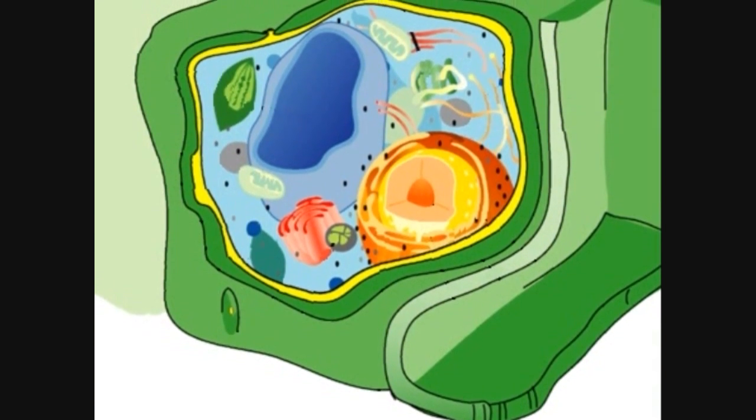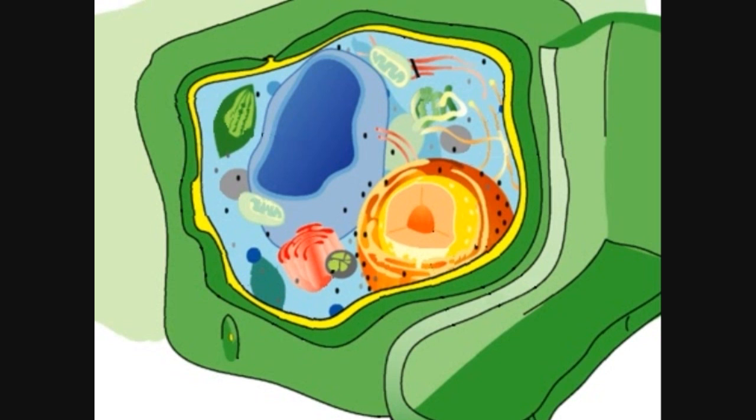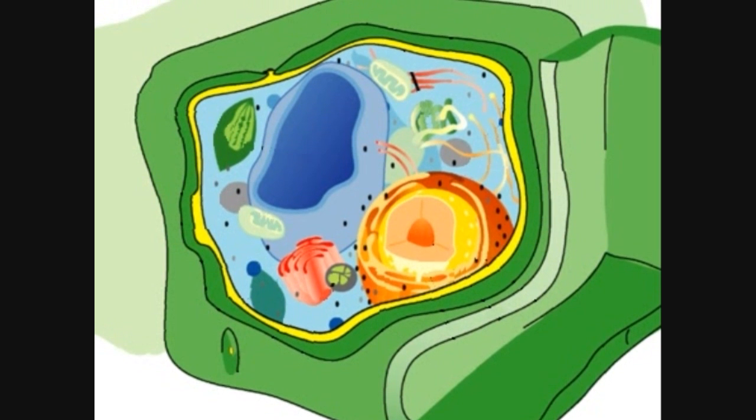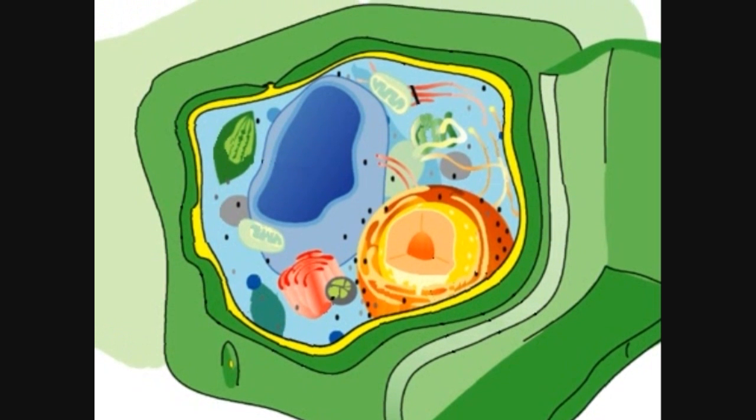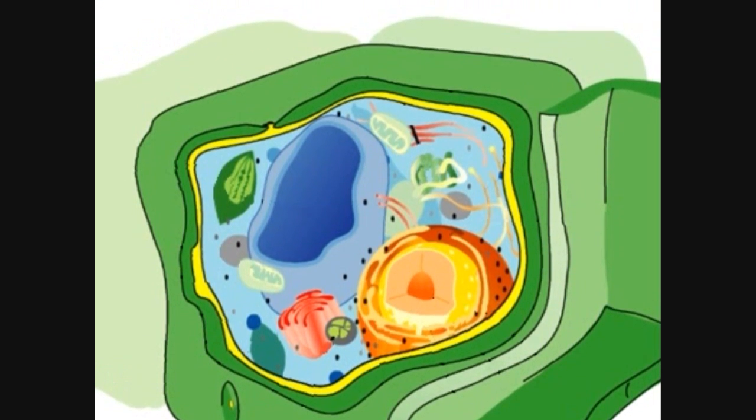The cell wall is found only in plant cells. It surrounds the cell membrane and helps protect and support the cell.